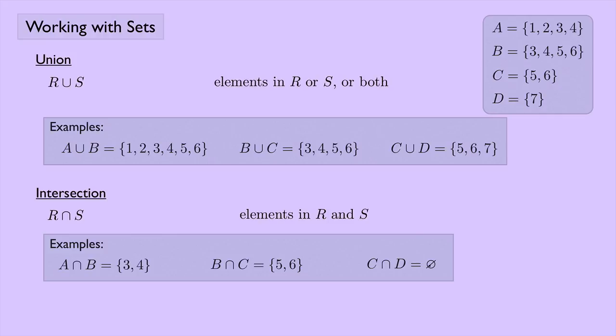C intersect D, that's the empty set. They don't have any elements in common. And that's a special case. Two sets that have no elements in common are said to be disjoint. So in this case we could say that C and D are disjoint sets.